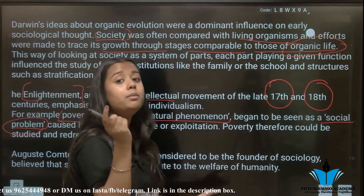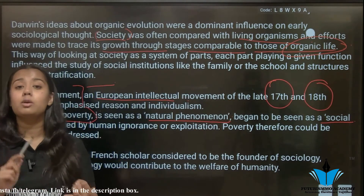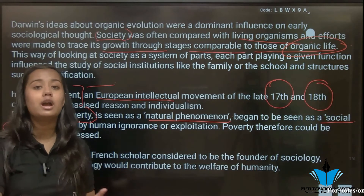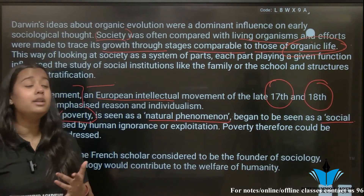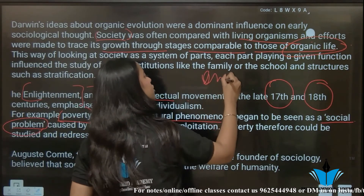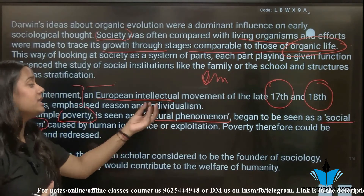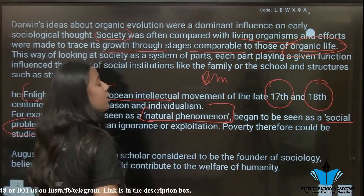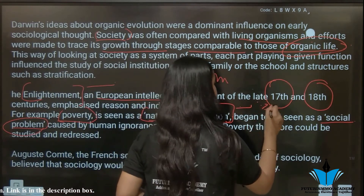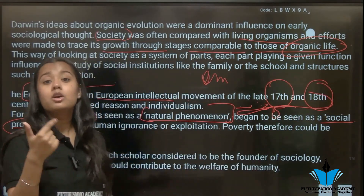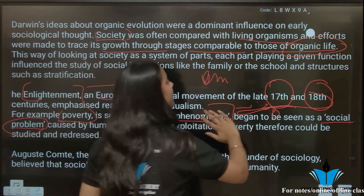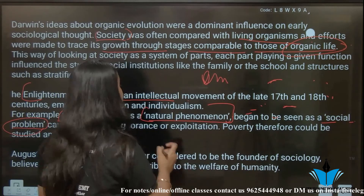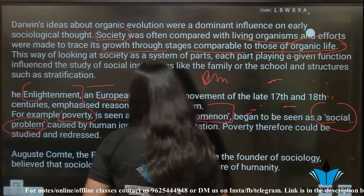Why is poverty a social problem? Why do people have such low income? Because there is poverty. But why is there poverty? First of all, there is social inequality. People who belong to lower castes are not able to work properly, and employment opportunities are not sufficient. If we start with common sense, poverty seems like a natural phenomenon — but we have studied in the previous video how common sense and naturalistic sense differ. Now, poverty is not just a natural phenomenon, but a social problem that our society faces.